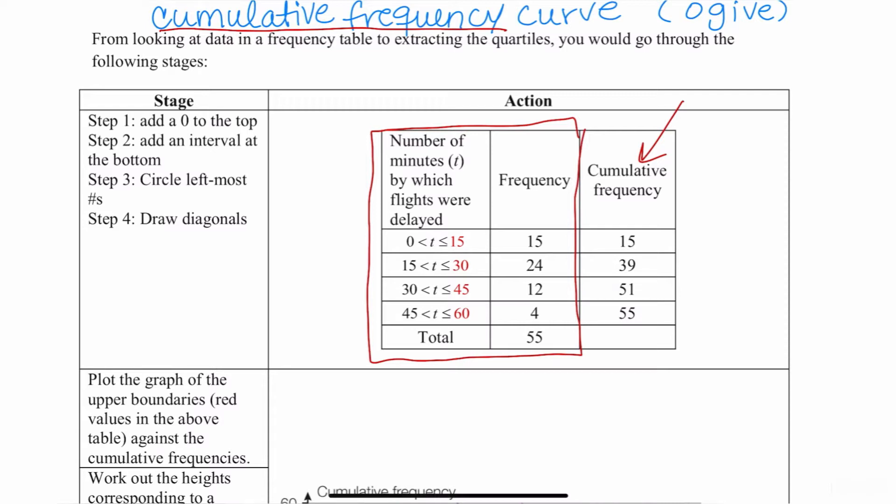And as a review, the way cumulative frequencies work is that, for example, so far in the first interval, I have a frequency of 15, then you add the 24 to 15 and you get 39. If you add 39 to 12, you get 51. And if you add four, you get 55. And notice the total and the last number in that column always match.